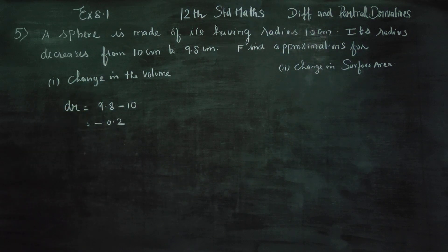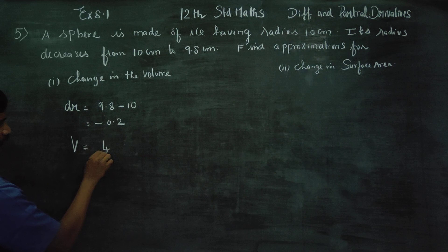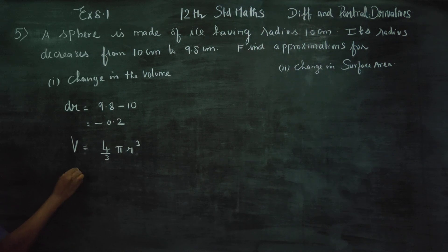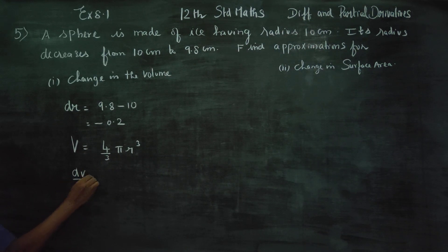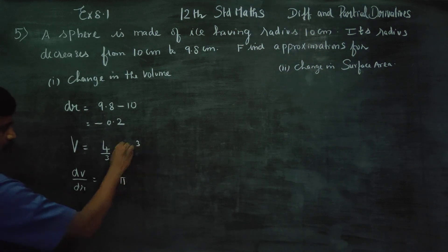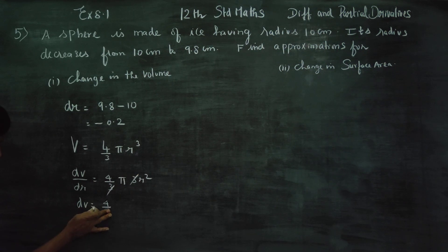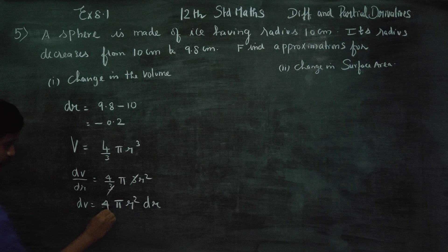Next, change in volume. The volume of the sphere is 4/3 π r³. Differentiating this, dV/dr equals 4/3 π into 3r². Cross multiplying, therefore dV equals 4π r² dr.